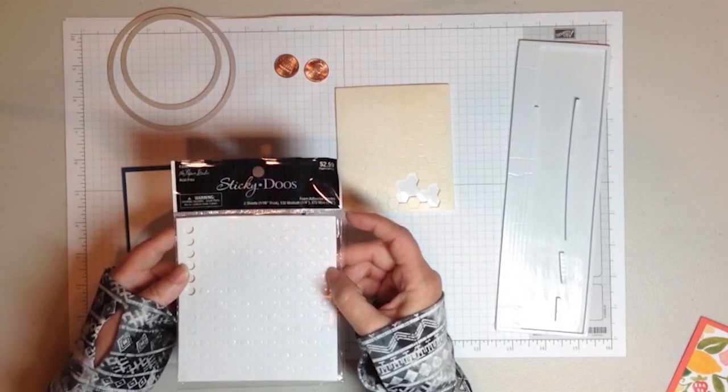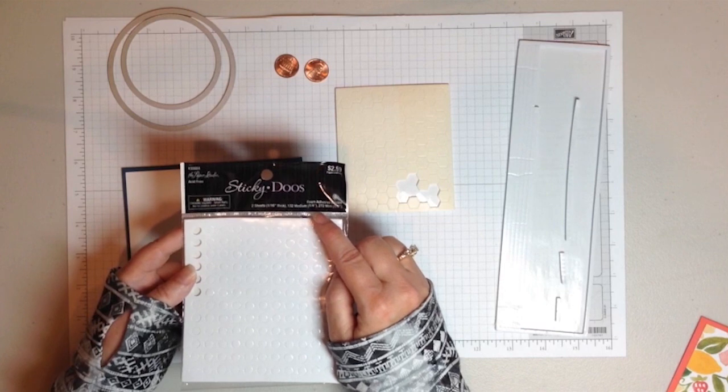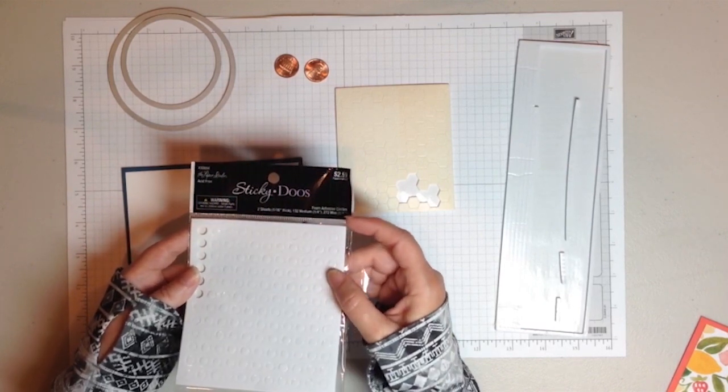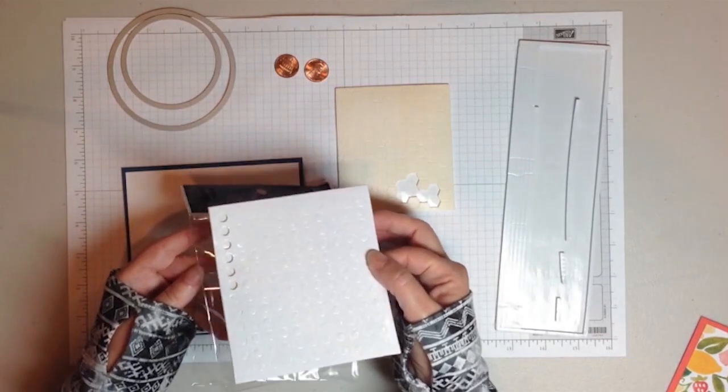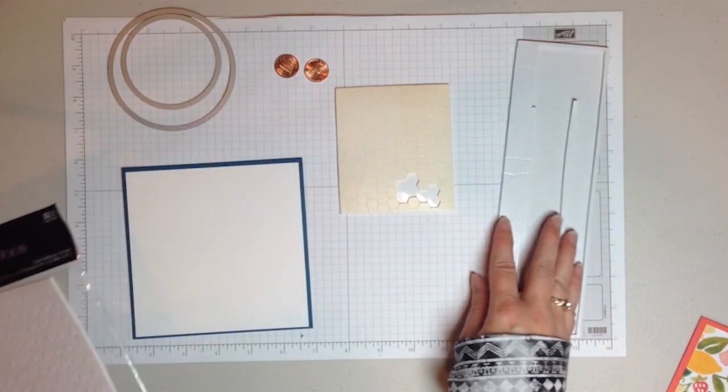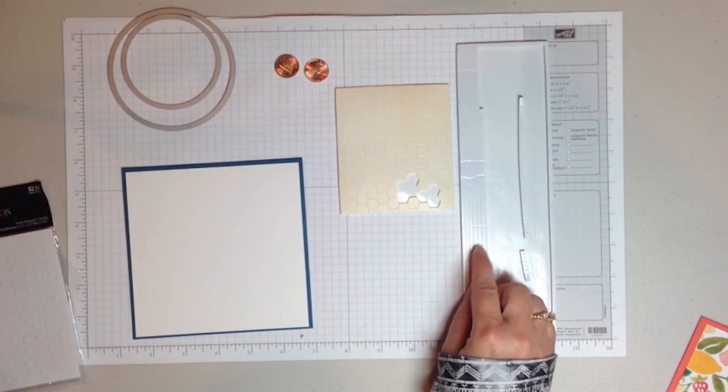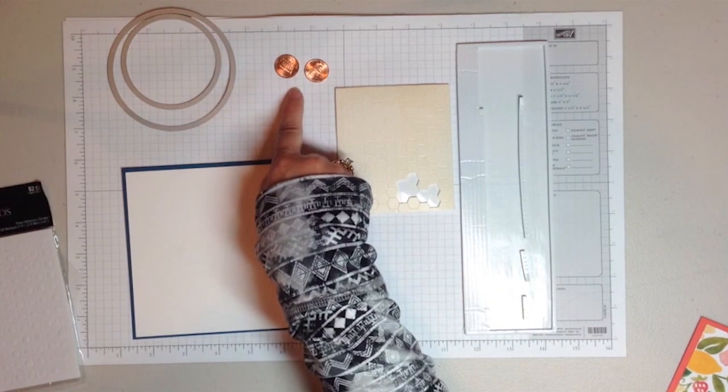So the ones that I found that I like are actually quarter of an inch that are made by Sticky Do by the Paper Studio, but you can find a lot of different variations on these. I also use the adhesive strips from Stamping Up and two pennies.